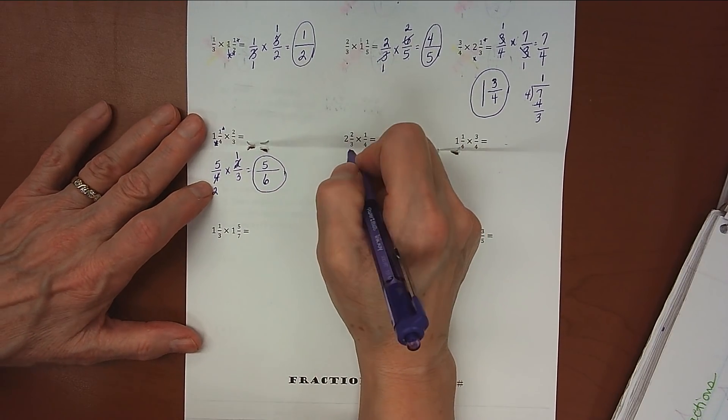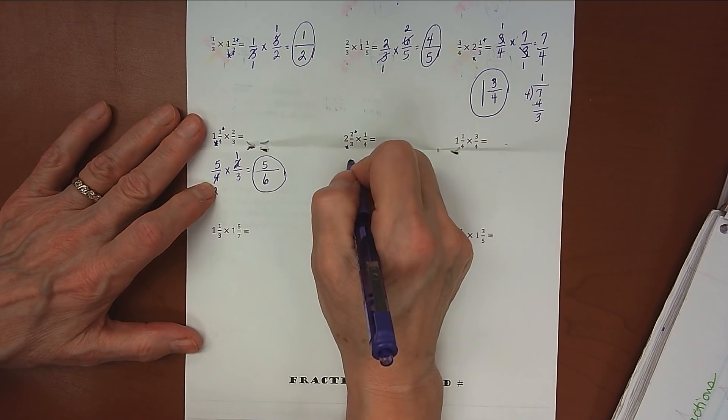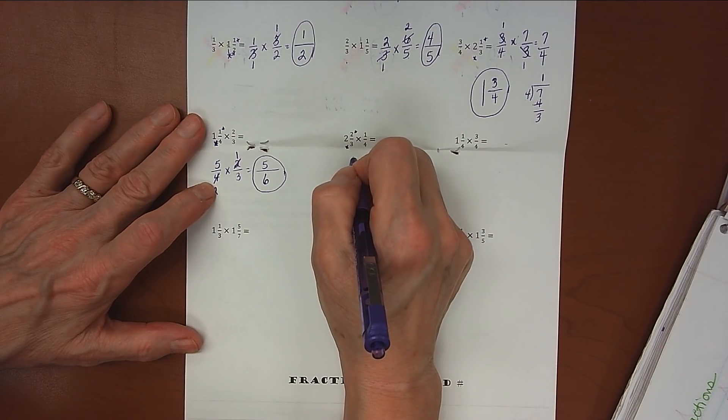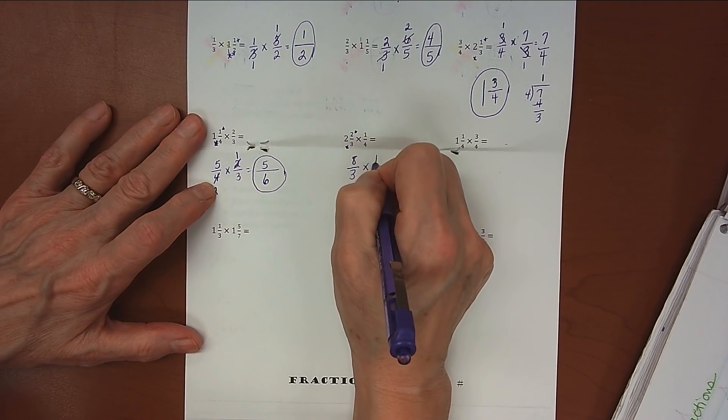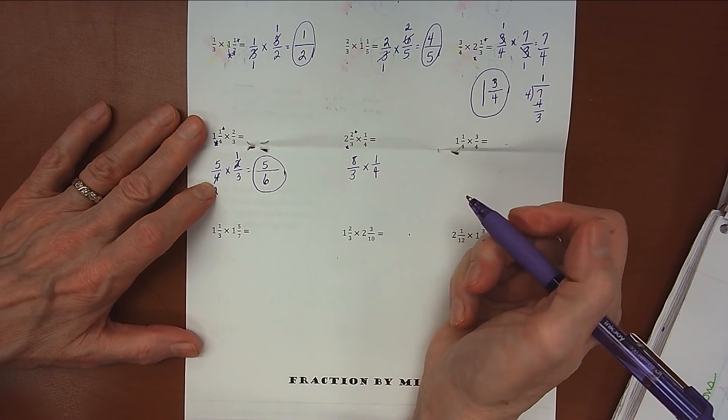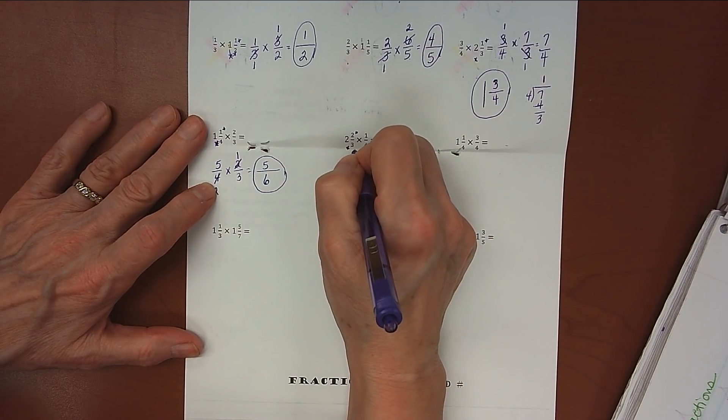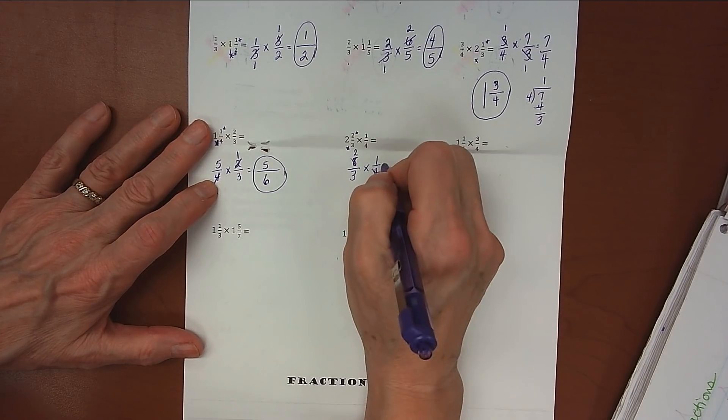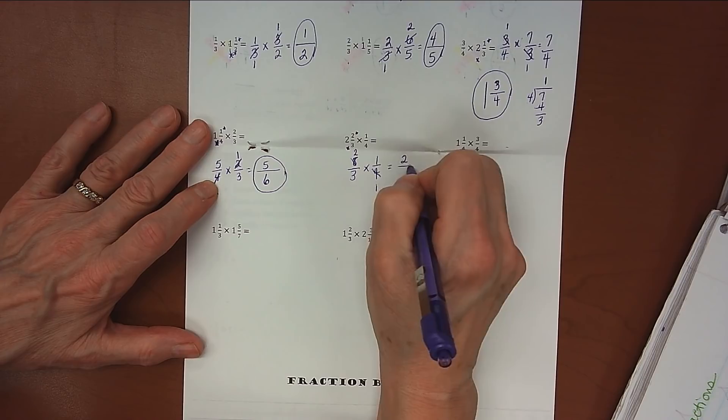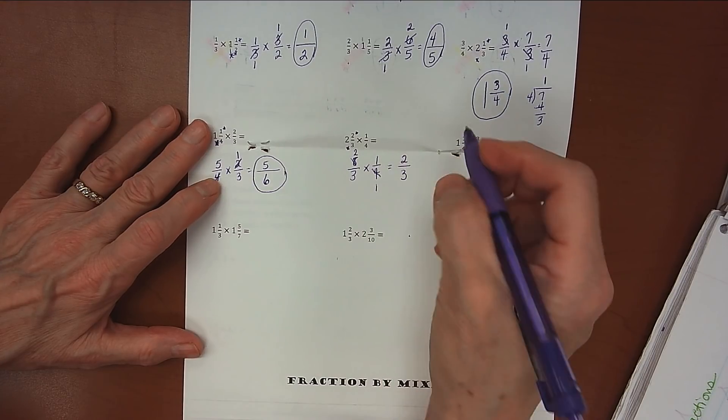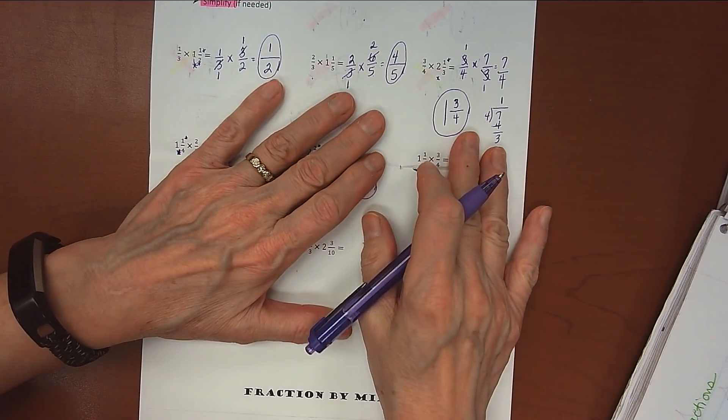Okay, here we go again. 2 times 3 is 6, plus 2 is 8, 8/3 times 1/4. Look for opportunities to cross-simplify. Both of these can divide by 4. 4 divided by 4 is 1, 8 divided by 4 is 2. Can't cross-simplify here. 2 times 1 is 2, 3 times 1 is 3. So our answer there is 2/3. Alright.